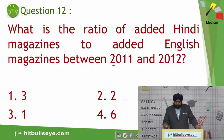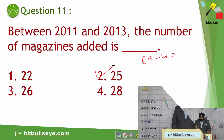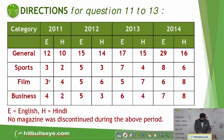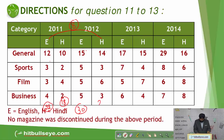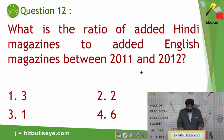Again a ratio question: ratio of added Hindi magazines to added English magazines between 2011 and 2012. Table B is to be used. In 2011 English magazines: 12, 3, 15, 3, 18, 4, total 22. In 2012 English: 15, 5, 20, 25, and 5 = 30. So English magazines added = 30 minus 22 = 8. Similarly Hindi magazines in 2011: 12, 4, 16, 2, 18. In 2012: 14, 3, 17, 6, 23, plus 3 = 26. Hindi added = 26 minus 18 = 8. The required ratio is 8 to 8 = 1. Hence the third option is the answer — just addition required.